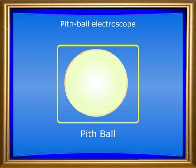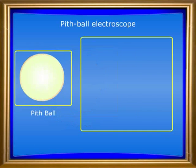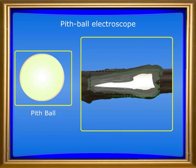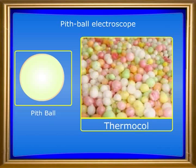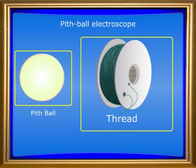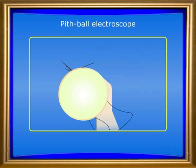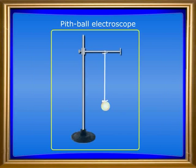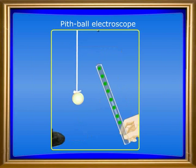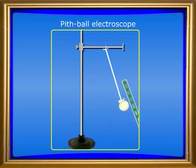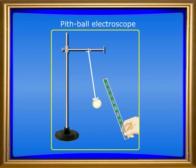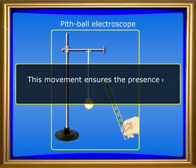To construct the pith-ball electroscope, you will need a small ball cut out of the pith present in any dry plant stems. You can also use thermocol instead of pith. A long silk or cotton thread may be passed through the pith ball and hooked up to some non-conducting stand. When a body is brought near to this pith ball, it moves towards the body and flies back when it touches the body. Thus, this movement ensures the presence of an electric field over the body.